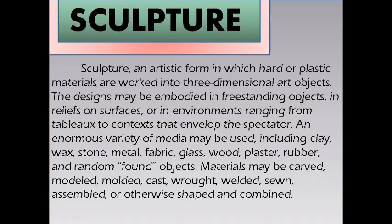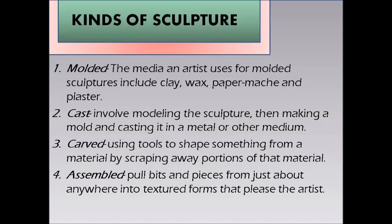Modernist sculpture moved away from traditional processes and the depiction of the human body, with the making of constructed sculpture and the presentation of found objects as finished artworks. The kinds of sculpture include: molded (using clay, wax, papier-mâché, and plaster); cast (modeling the sculpture, then making a mold and casting it in metal); carved (using tools to shape material by scraping); and assembled (pulling bits and pieces together into textured forms).